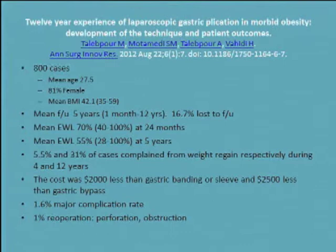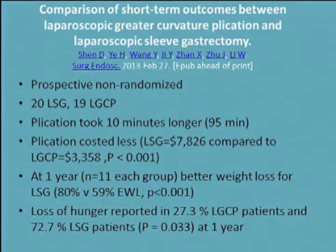Plication clearly costs less than the sleeve, band, or bypass — and that accounts for some of its popularity in certain parts of the world. It can still be done with fairly low major complication rates. In this series there was a 1% re-operation rate due to either a perforation or obstruction from the fold.